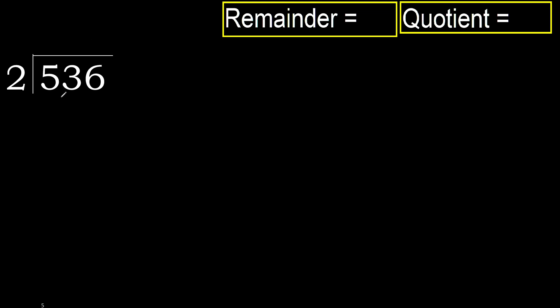536 divided by 2. 5 is not less, therefore with 5, 2 — multiply by which number is nearest to 5 but not greater.